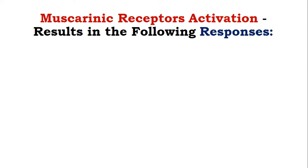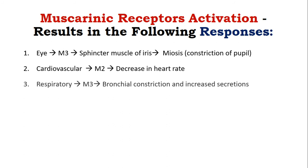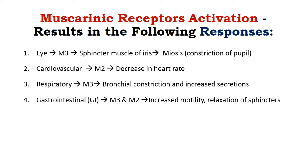To summarize the muscarinic receptor activation response: In the eye, due to M3 activation in the sphincter muscle of the iris, it leads to miosis — constriction of the pupil. In the cardiovascular system, M2 activation leads to decrease in heart rate, contractility, and conduction velocity. In the respiratory system, M3 receptors cause bronchoconstriction and increase bronchial mucus production. In the gastrointestinal system, M3 and M2 get activated, increasing motility, causing sphincter relaxation, and increasing intestinal secretions.